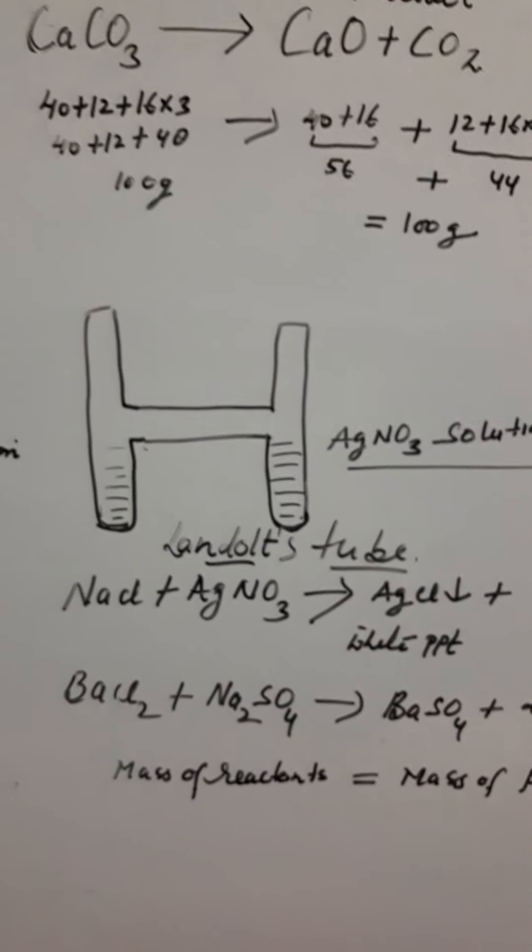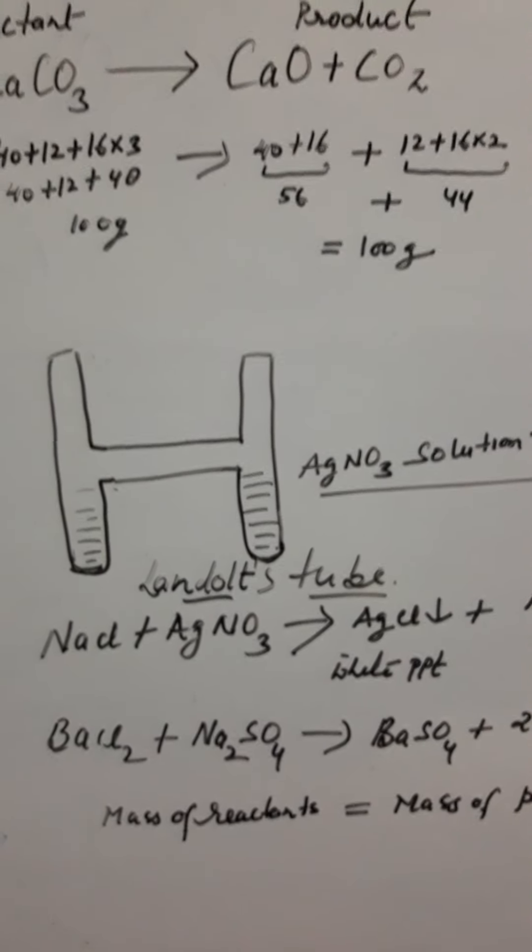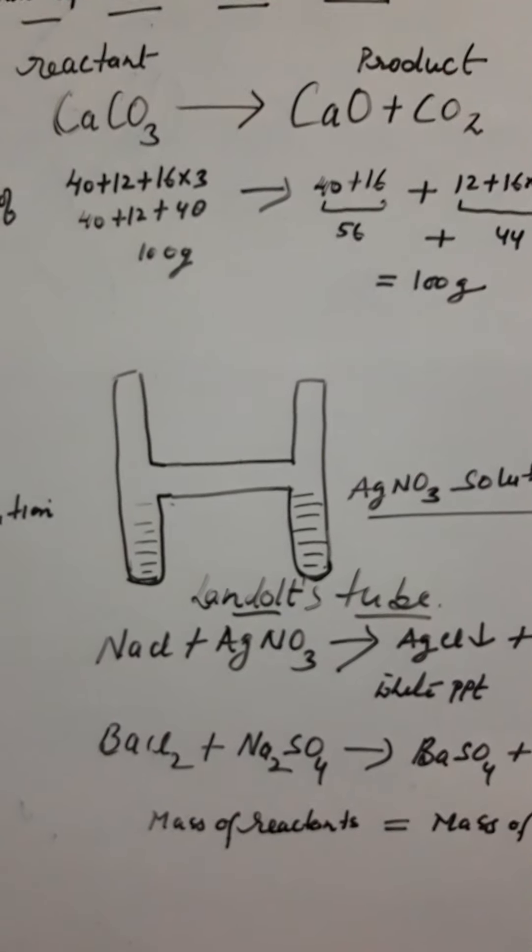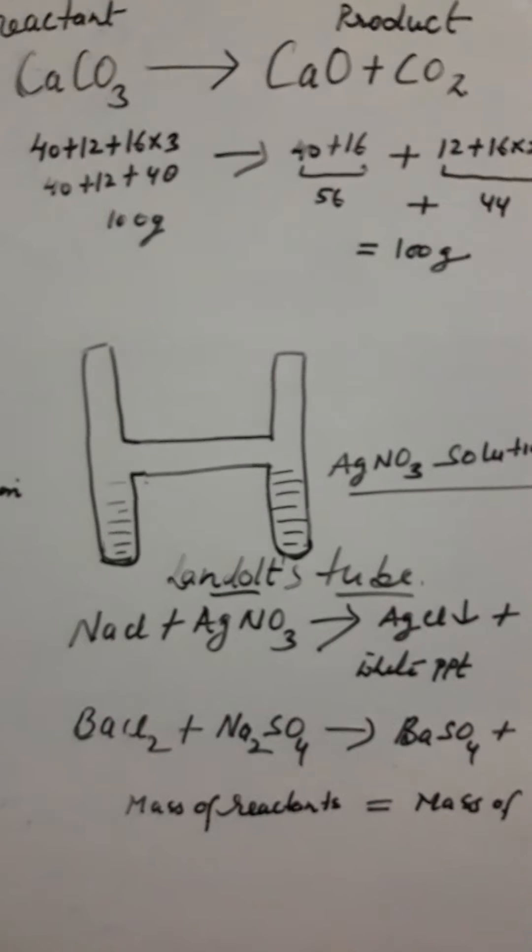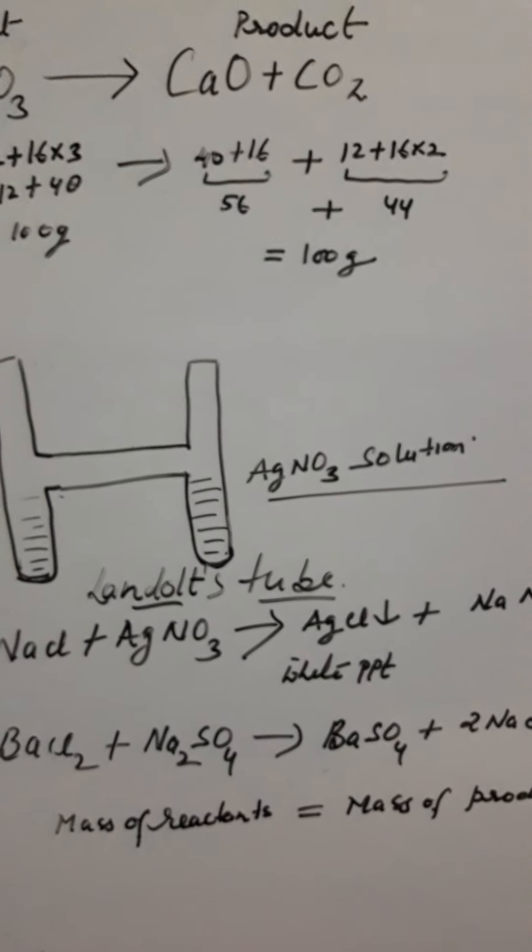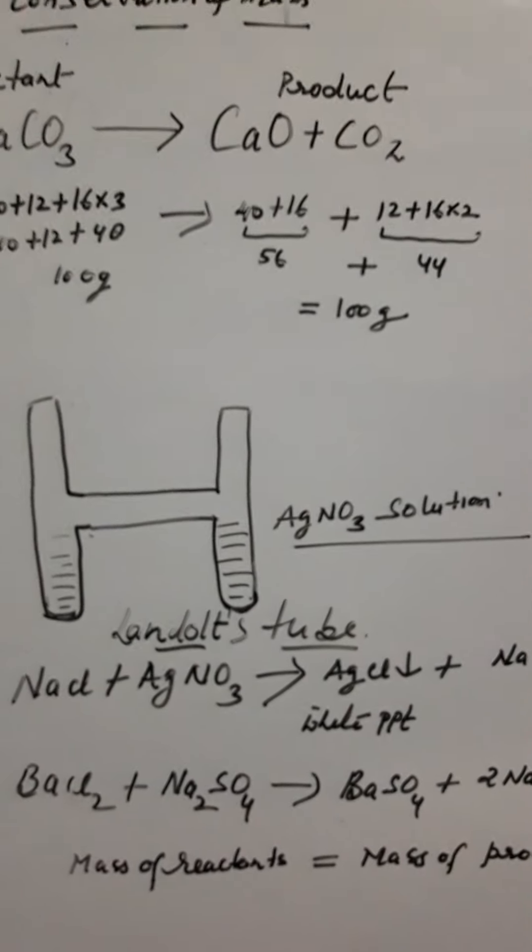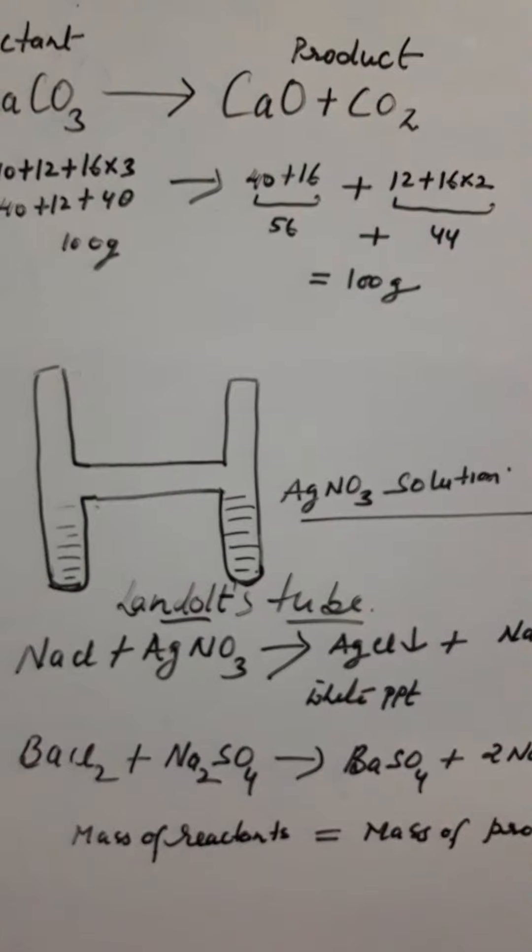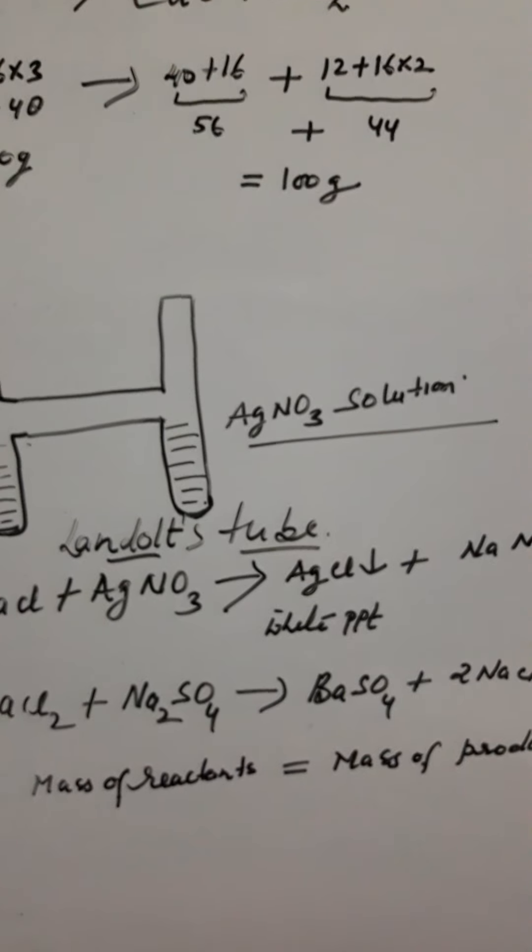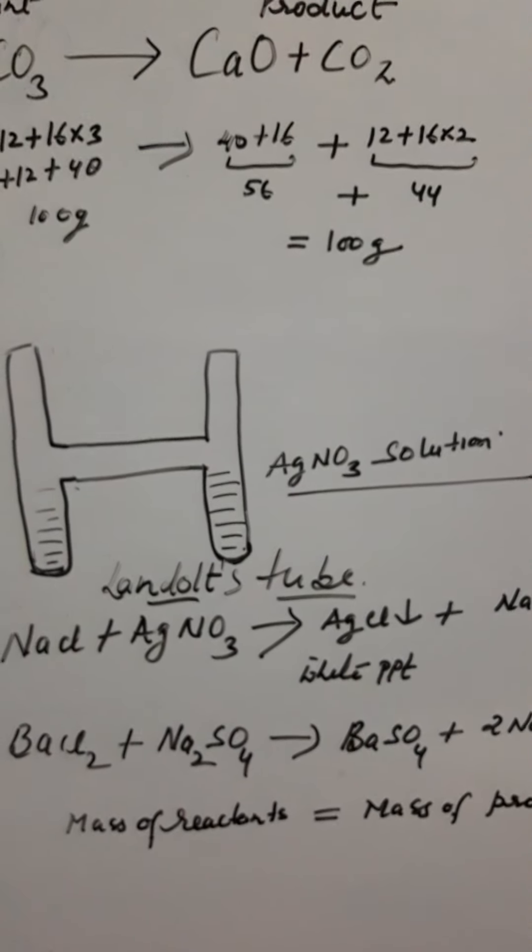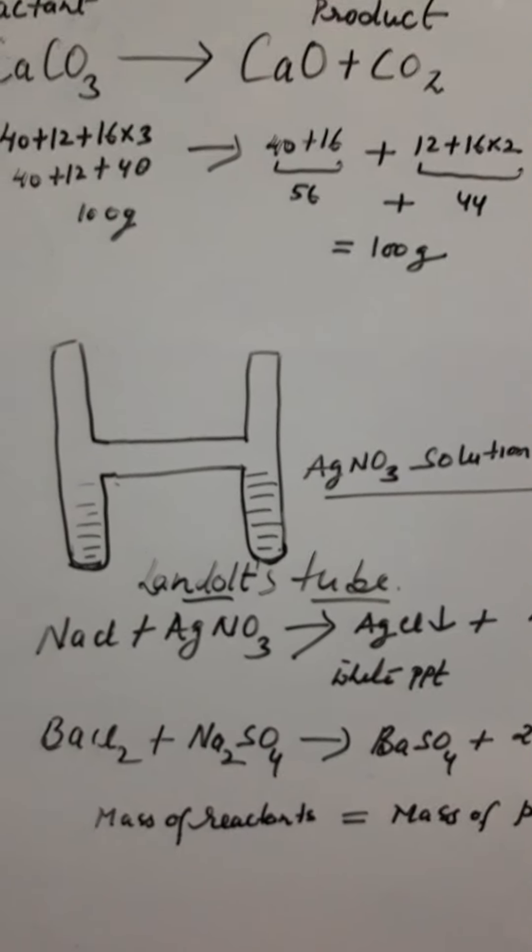we will take one experiment using a Lendol tube, a special tube which has two limbs. In one limb we take a solution of sodium chloride (NaCl), and in another limb we take a solution of silver nitrate (AgNO3). We seal the tube, take the weight, and note it down. Now invert the tube so that the solutions can mix together and react chemically.